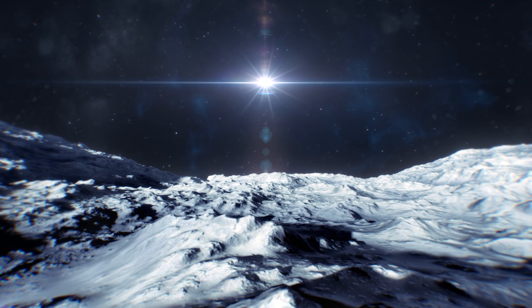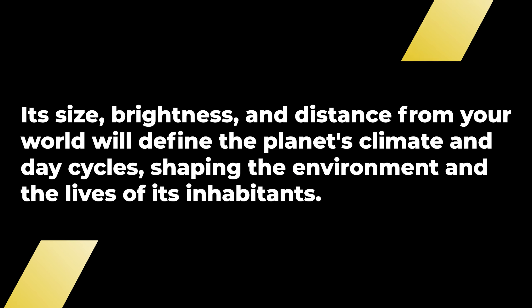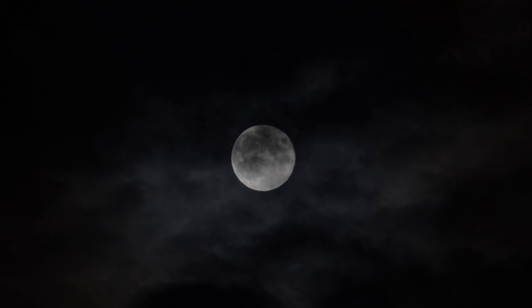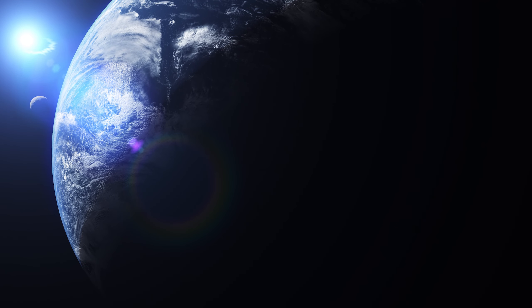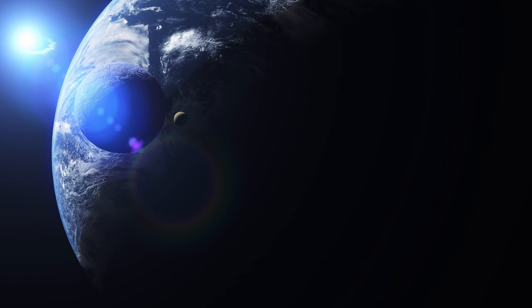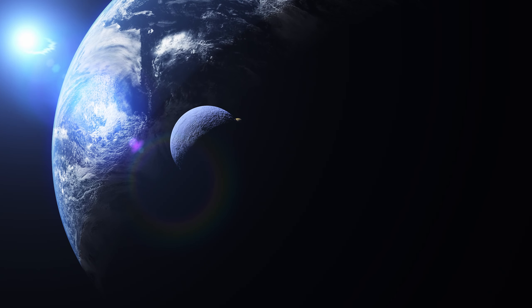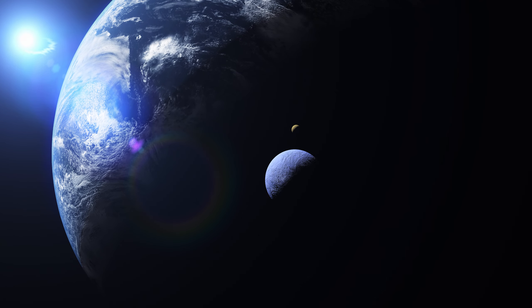When selecting Celestial Bodies, consider their overall role and influence on your world. Start with a star, the heart of any planetary system. Its size, brightness and distance from your world will define the planet's climate and day cycles, shaping the environment and the lives of its inhabitants. Stars can be diverse, from hot bright giants to cooler dimmer dwarves, each setting a unique stage for your stories. Including moons can add further complexity — they could affect tides, weather and even cultural beliefs. A planet with multiple moons might experience complex tidal patterns, influencing both natural ecosystems and societal development, which could include moon-based myths and legends.